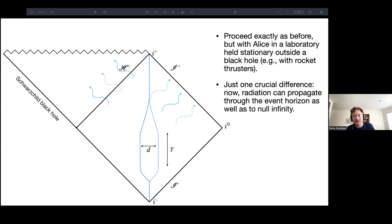So let's look at the black hole case and see how it differs. We're going to be in the presence of a Schwarzschild black hole. I've indicated the interior region here, and the horizon is this H plus and SCRI plus now is just this null surface here. And we're going to proceed exactly as before, but Alice is now in a laboratory held stationary outside of a black hole. You could imagine she's using rocket thrusters to keep her laboratory at a fixed radius in the exterior. There's one crucial difference, which is going to turn out to be the important difference. In the case of a black hole, everything proceeds exactly as before if we consider this part of the diagram, but radiation can now also propagate into the event horizon.